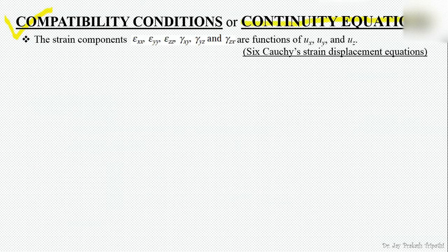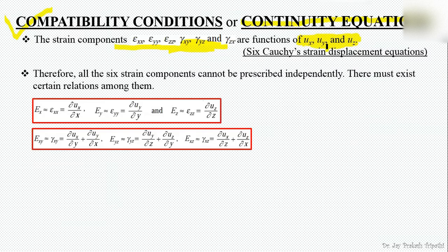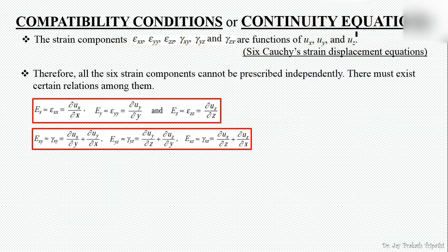Next, compatibility conditions — also known as continuity equations. To understand these conditions, let's discuss the relationship between strain components and displacement fields having components ux, uy, and uz. These relationships are derived from 6 strain-displacement equations. Since we have 6 strain equations for only 3 displacement components, all 6 strain components cannot be prescribed independently — there must exist some relationship among them.